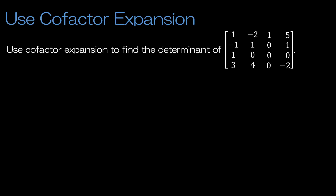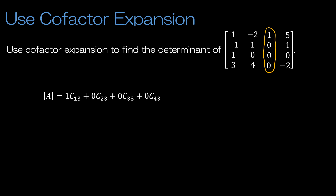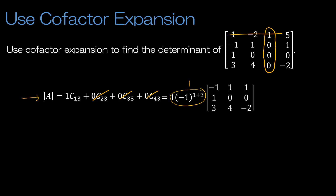Here's a cofactor expansion question for you to try on your own. Press pause. Use either row or column cofactor expansion to find the determinant. When you're ready, press play to see how you did. If you're trying to minimize work, you've either chosen the third column or the third row. I chose the third column, so I have 1 times the cofactor of row 1, column 3, and the others are 0s so I don't care about them. I go straight to: 1 times negative 1 to the 1+3, which equals 1, times everything left over: negative 1, 1, 1, 0, 0, 3, 4, negative 2.